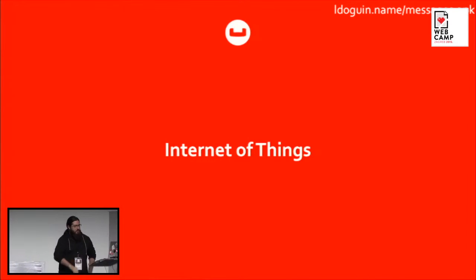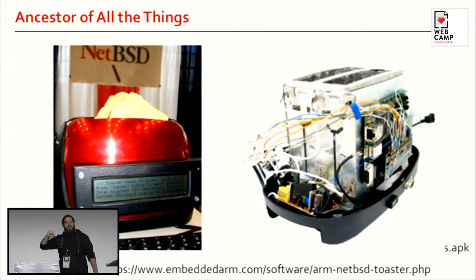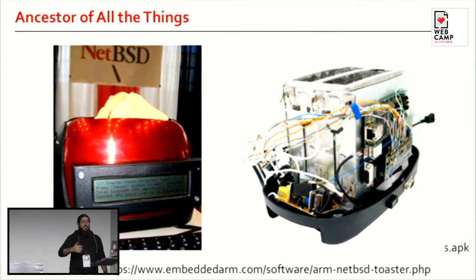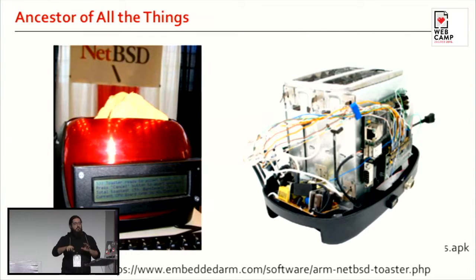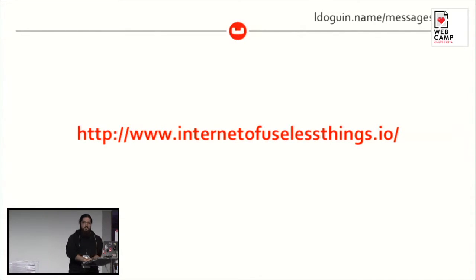Let's jump to the broad topic of today, which is the Internet of Things. Has anybody seen this before? This is the ancestor of all things — a toaster running NetBSD, one of the first everyday objects you have at home that is connected. One guy decided to run NetBSD on his toaster, and it can actually control all the toaster mechanisms through NetBSD. If you want to see more interesting examples like this, there's a website called the Internet of Useless Things — I invite you to check it out.